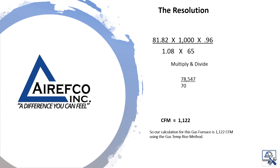Our resolution to this equation is to take our 81.82 cubic feet per hour times 1,000 BTU heat content times 96% efficiency of the furnace, divided by 1.08 times our temperature rise of 65 degrees. When we multiply and divide that out, our calculation comes out for this gas furnace to be 1,122 CFM using the gas temp rise method.